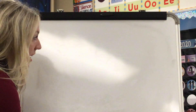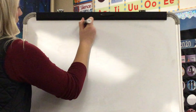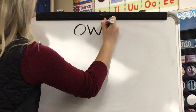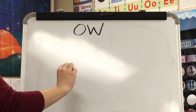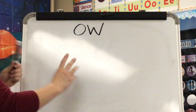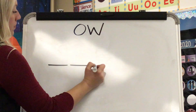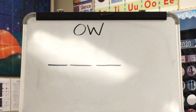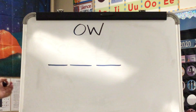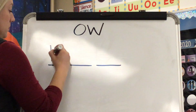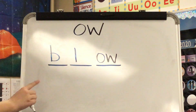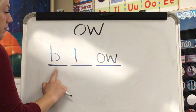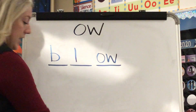All of our words today will have the O-W sound spelling in them. Our first word is blow. What word? Blow. Stretch blow: B-O-O. Write the sound spellings you hear in blow. Check. Spell blow: B-L-O-W. Word? Blow. Yes, blow.